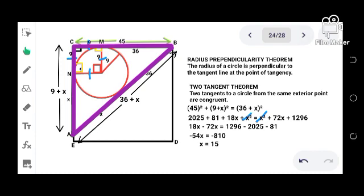Dividing both sides by negative 54, x is equals to 15. But remember, AB is equals to 36 plus x, and we have x is equals to 15. We replace x by 15, therefore AB is equals to 51. This is our answer and the problem is solved.